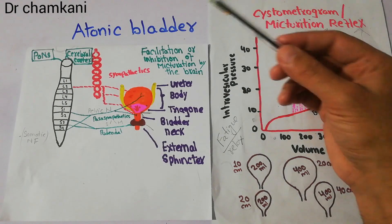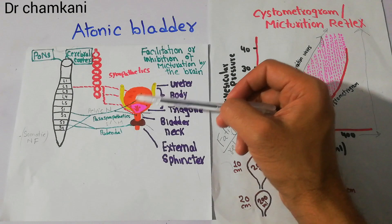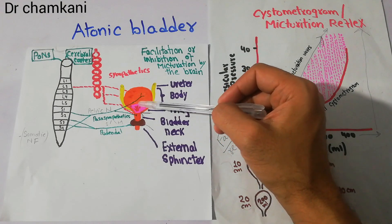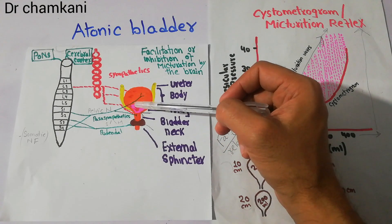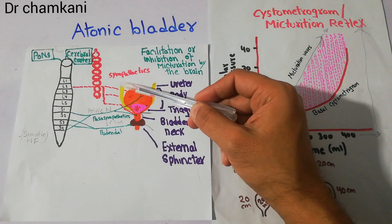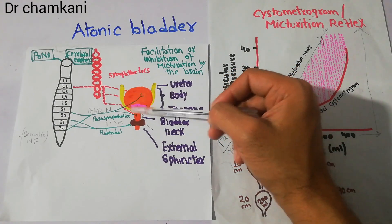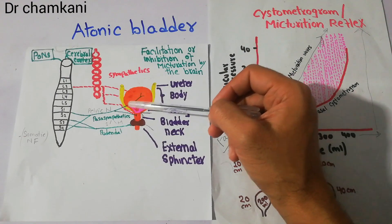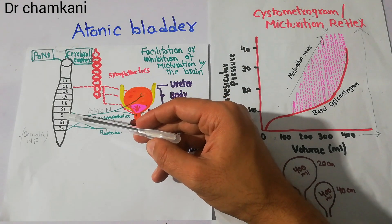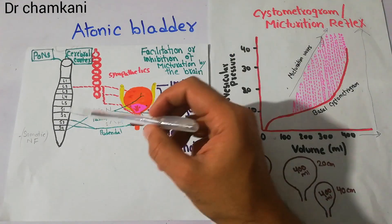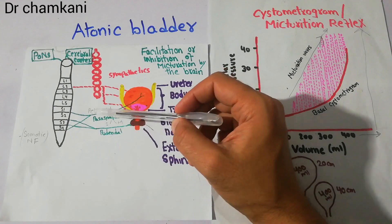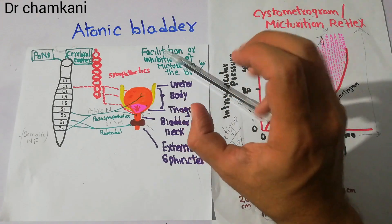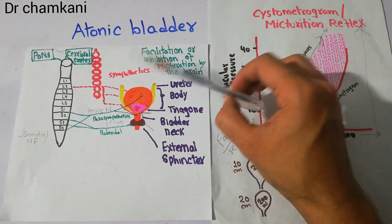The micturition reflex starts due to sensory stretch receptors on the posterior urethra and posterior side of the urinary bladder. When urine enters through the ureters and the bladder starts filling, these sensory stretch receptors get stretched and send signals to the spinal cord. The spinal cord initiates the micturition reflex, and motor signals travel through the pelvic nerve — which carries parasympathetic nerves — to start contraction of the urinary bladder.